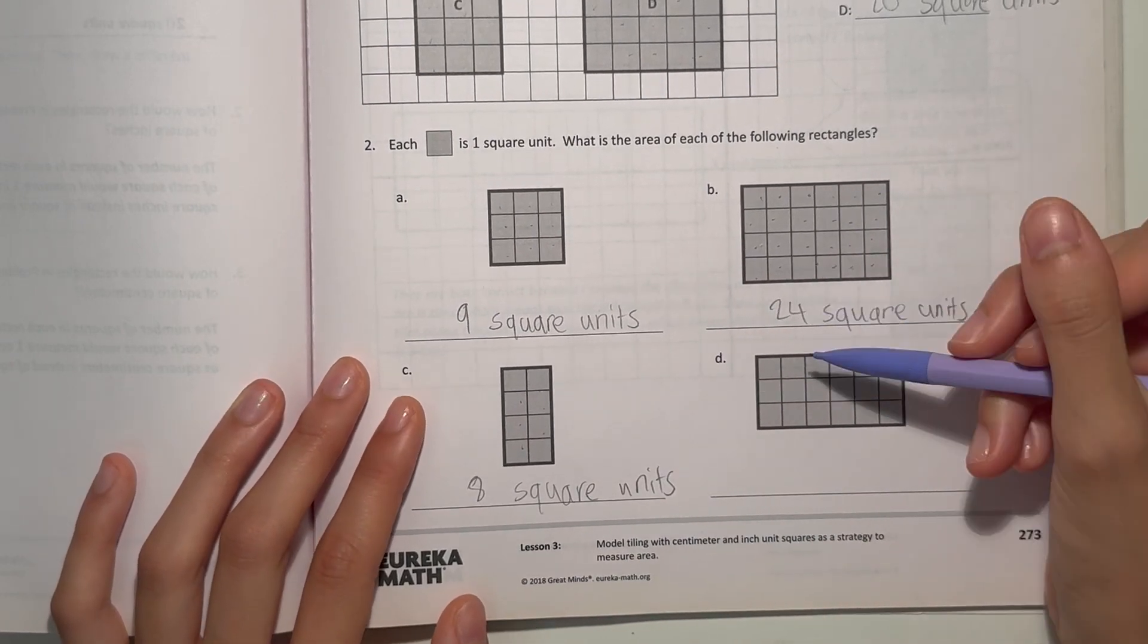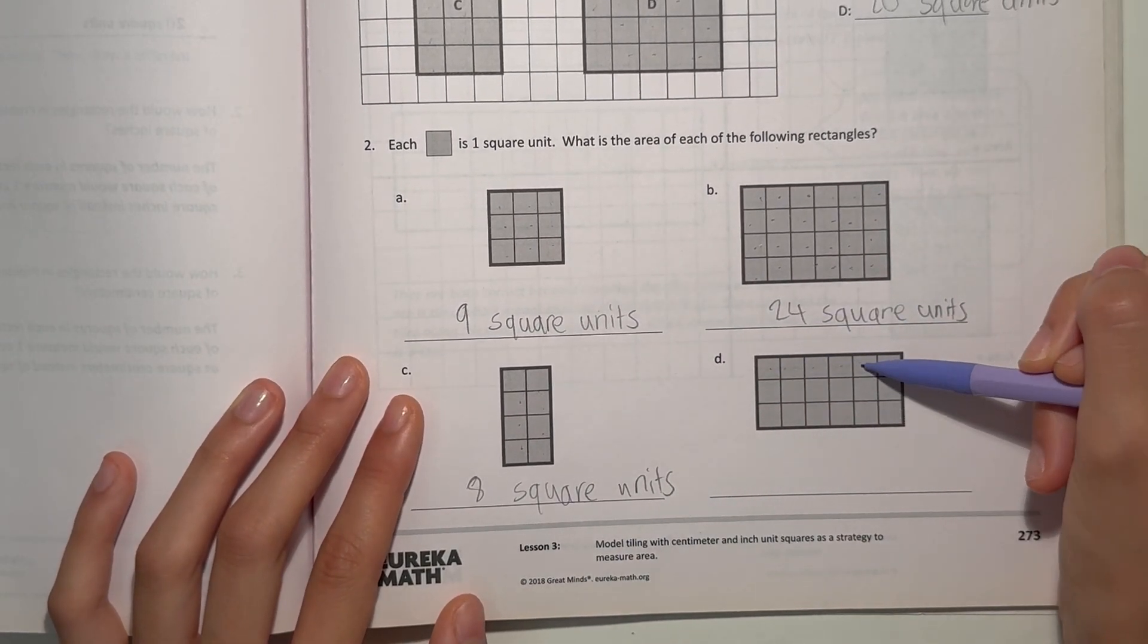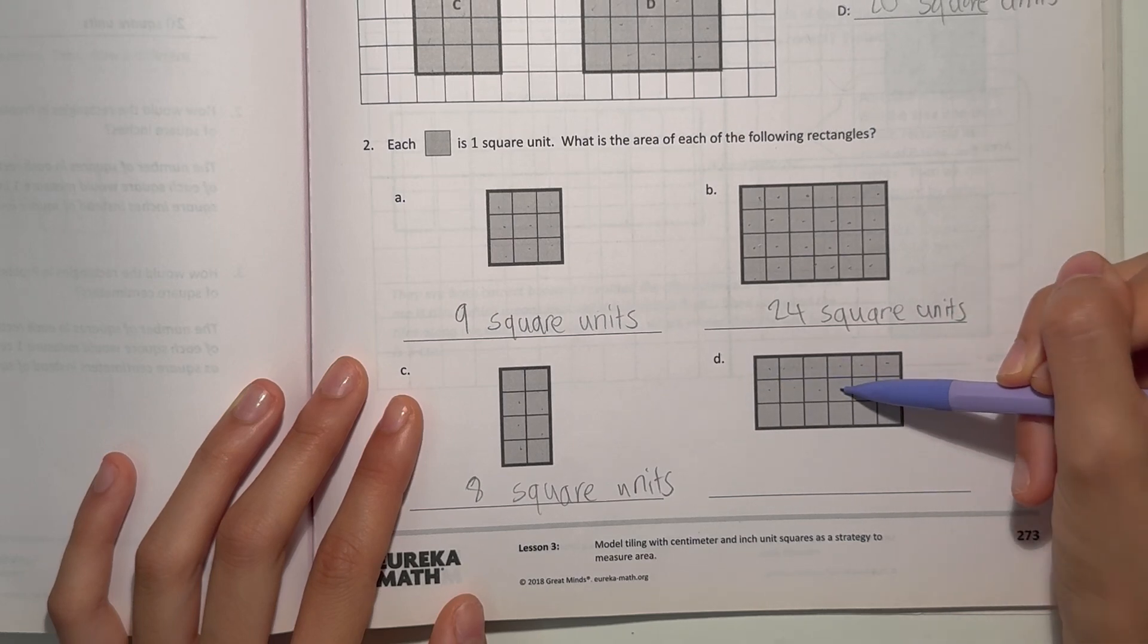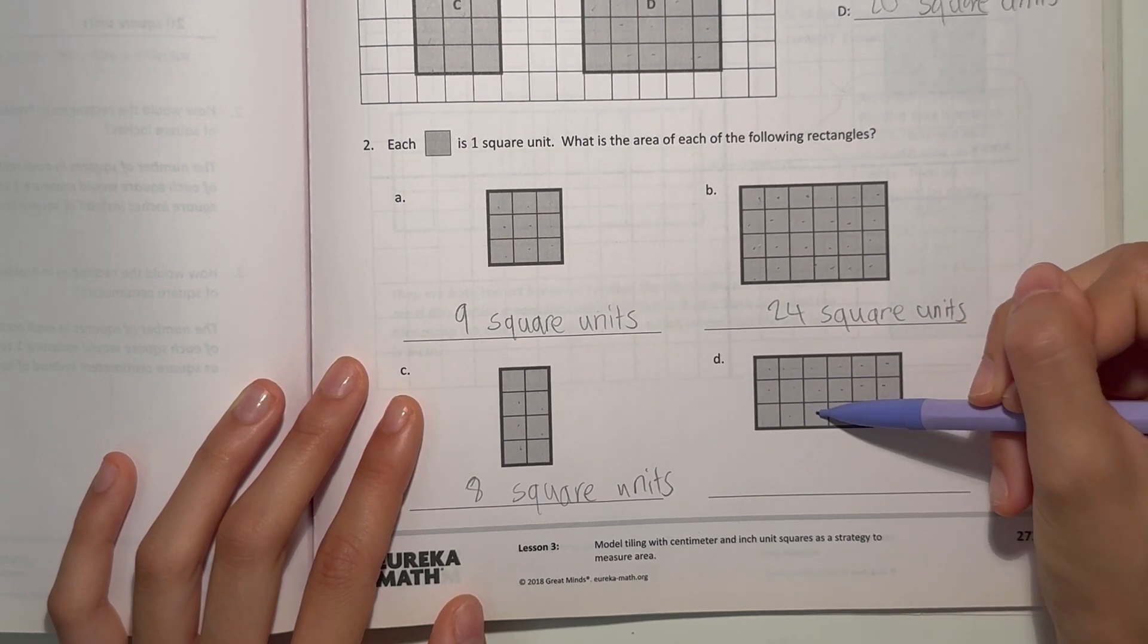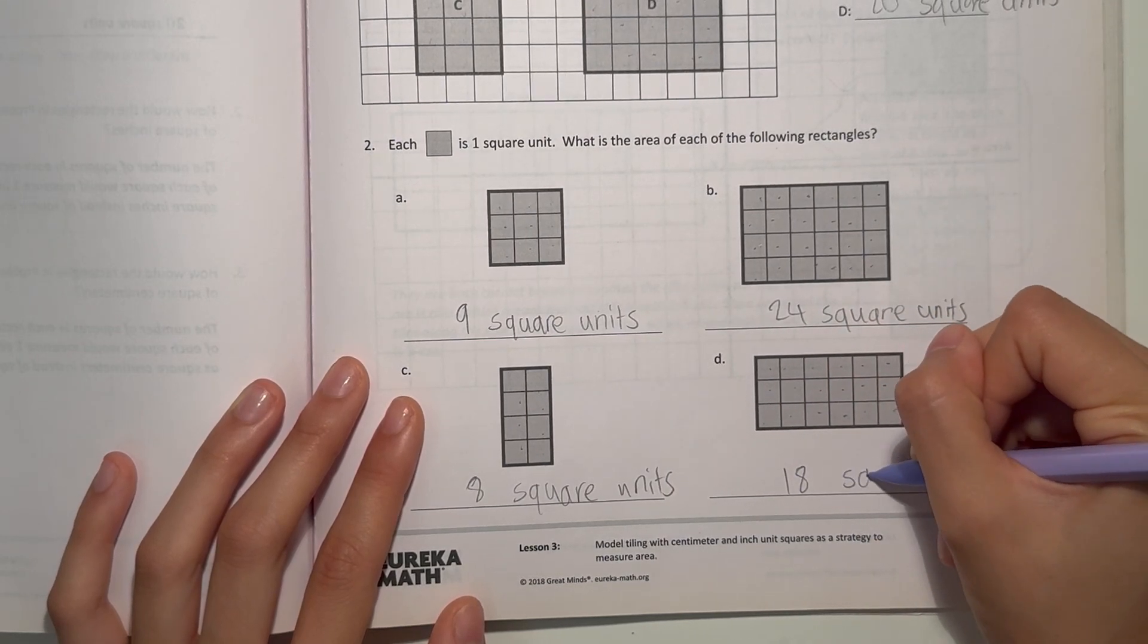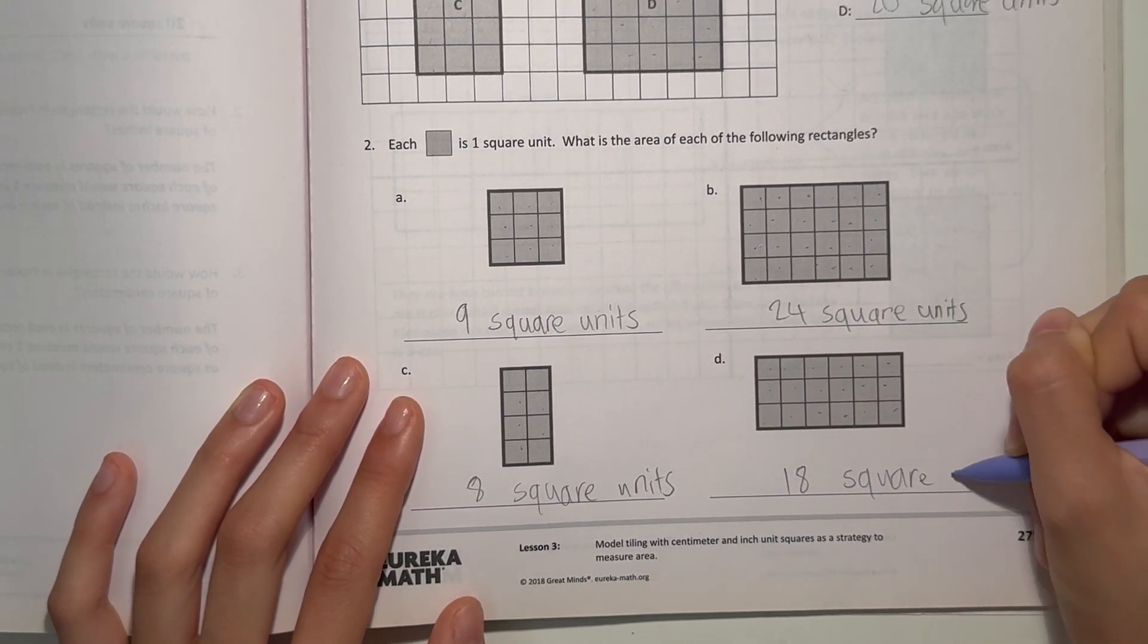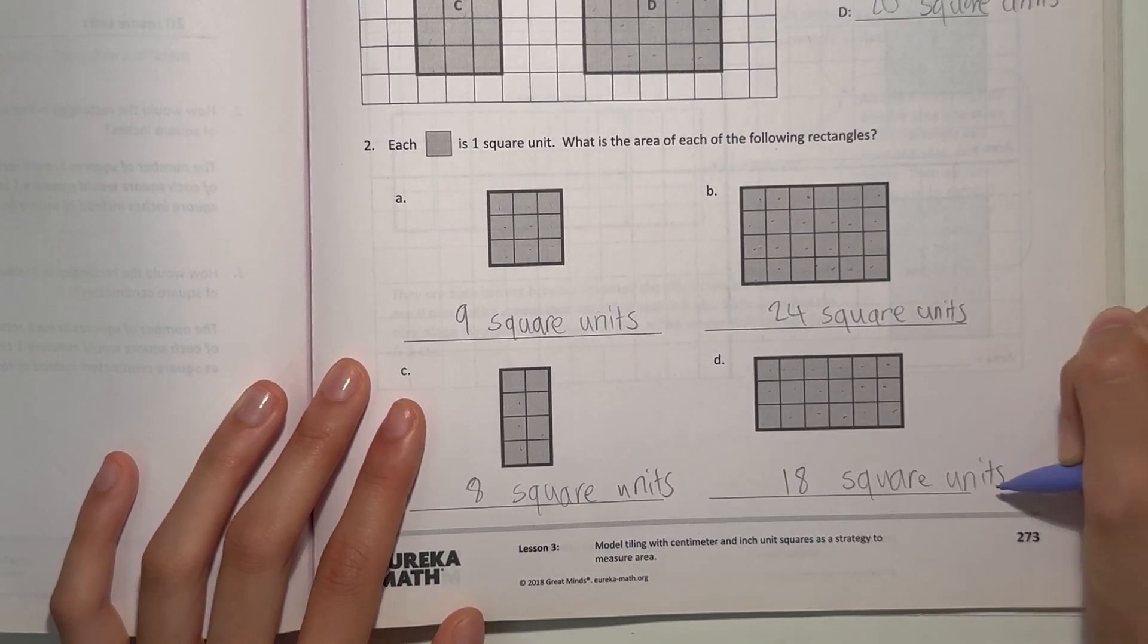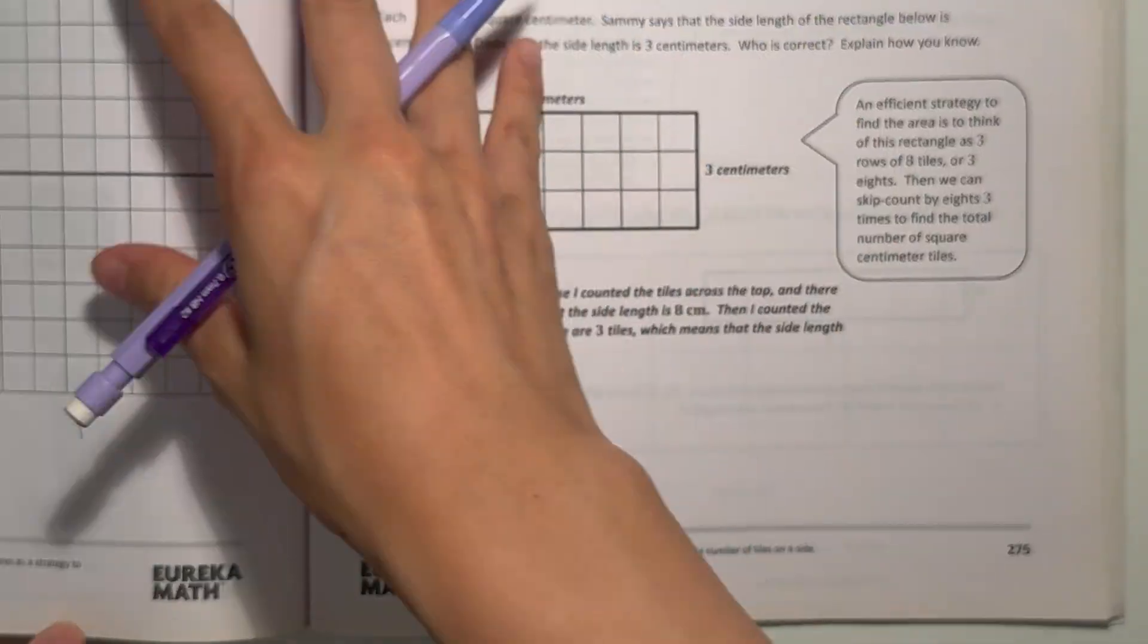And D, we have 1, 2, 3, 4, 5, 6, 7, 8, 9, 10, 11, 12, 13, 14, 15, 16, 17, 18. 18 square units is our area. Alright, next page.